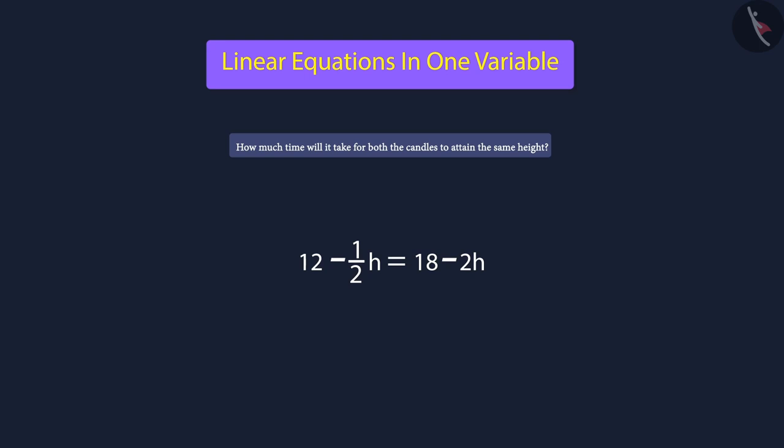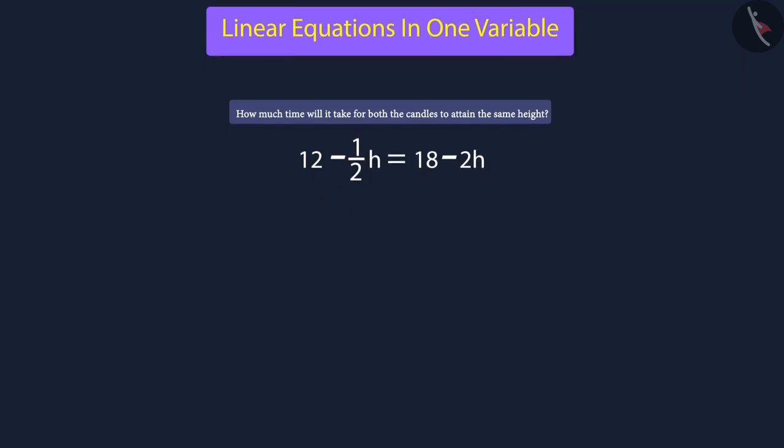So, when we replace the negative 2h and put it to the left, it will become positive 2h. Next, we must move 12 to the right side of the equation. So, the positive 12 that has been moved to the right will become the negative 12.